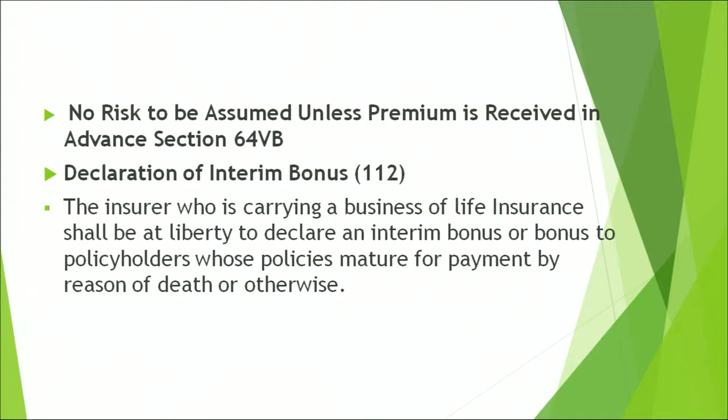No risk is to be assumed unless premium is received in advance — this is stated in Section 64B. Once the insurer receives the premium, only then does commencement of risk start. Prior to that, the insurer will not accept or assume any risk. Declaration of interim bonus is given in Section 112. Interim bonus refers to a bonus declared in between two valuation dates. There is a declaration of bonus at the end of every financial year, like 31st March. But if a policy is maturing midway, say in September or October, the insurance company can declare an interim bonus. The insurer carrying life insurance business has the full right to declare this interim bonus to policyholders whose policy matures between the two dates.